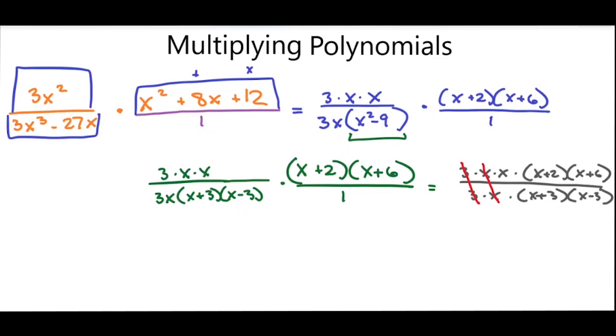So on top, I'm left with x times x plus 2 times x plus 6. And on the bottom, I'm left with x plus 3 times x minus 3.